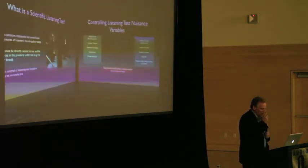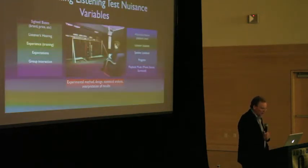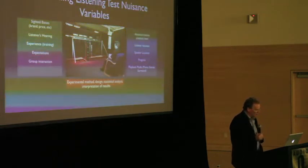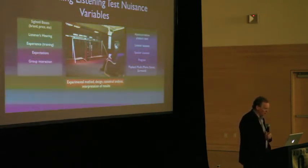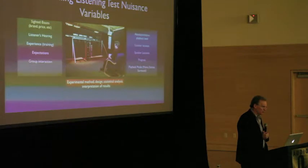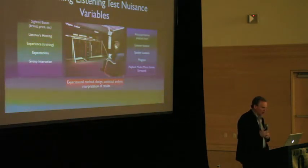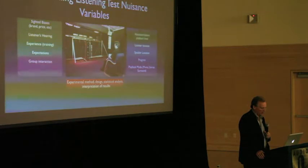And over the years, we've looked at different nuisance variables that can affect or bias a listening test. And there's basically three types. There's psychological or physiological nuisance variables. Those are the ones on the left-hand side. And they include sighted biases, the listener's hearing, how much experience they have or training, what sort of expectations do they have. And when you have multiple listeners participating, there's always a chance that you can have some interaction between people, which is not a good thing.